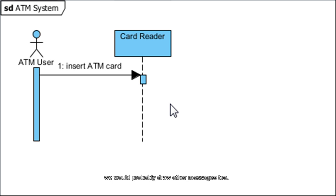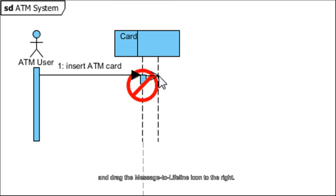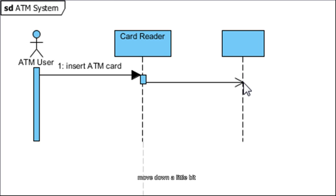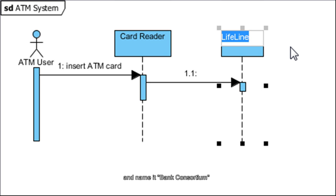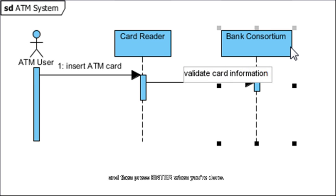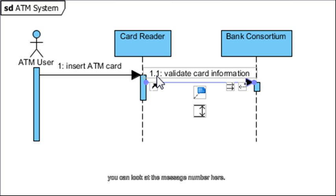Apart from the first message, we would probably draw other messages too. In our example, it's now the Card Reader's turn to send a message to Bank Consortium and ask it to validate the card information. Select the vertical bar here and drag the Message to Lifeline icon to the right, move down a little bit, then release your mouse button. Name it Bank Consortium and press Enter. The moving down part is crucial because we want to indicate one level down in nesting — the message number should be 1.1 to indicate the nesting level instead of 2.